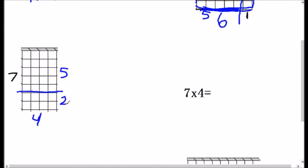Because 4 times 2 is 8. So I broke up that 7 into 5 plus 2 times 4. 4 times 2 gives us 8. 4 times 5 gives us 20. And 20 plus 8 is 28.